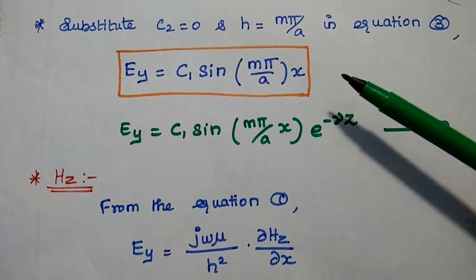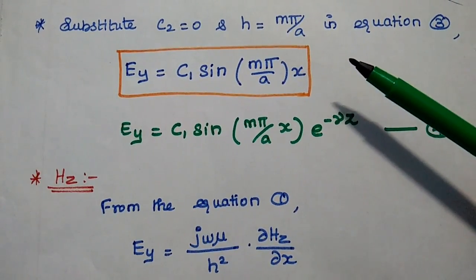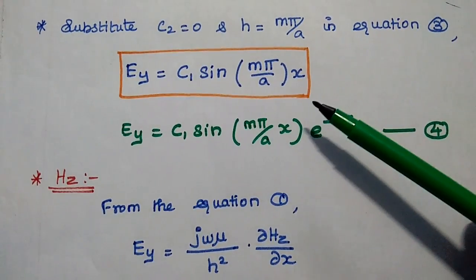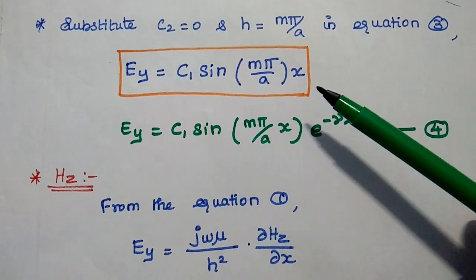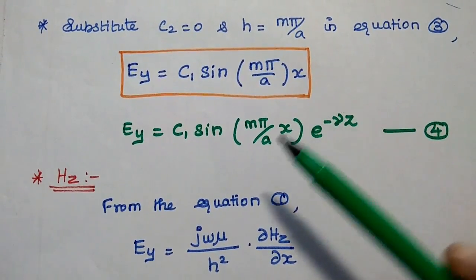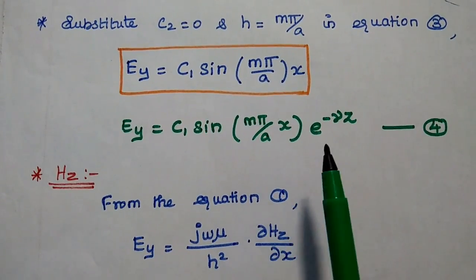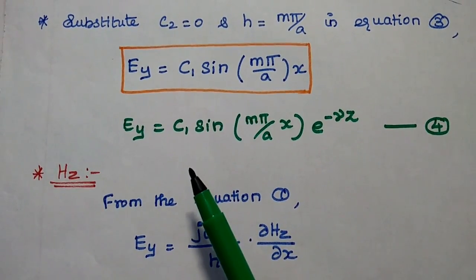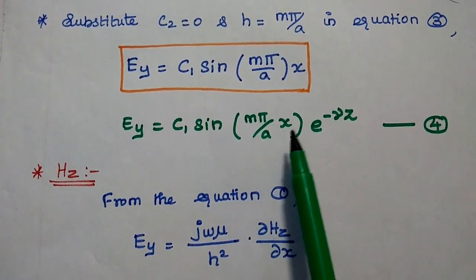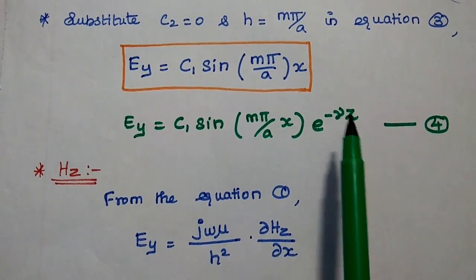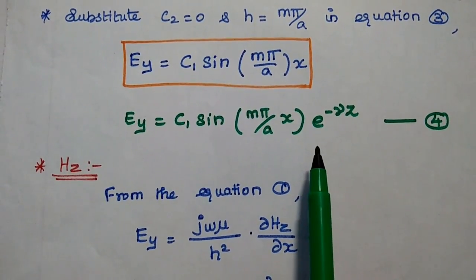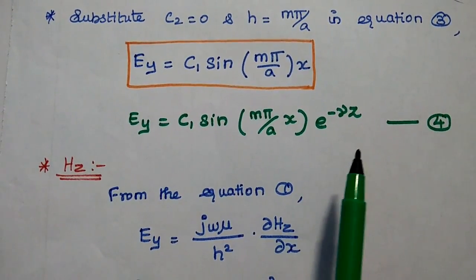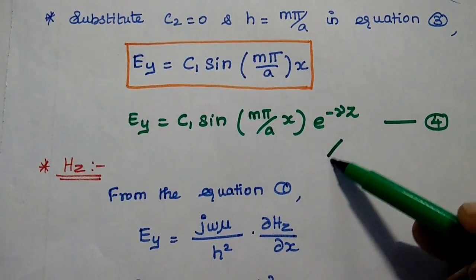Substituting C2 = 0 and H = Mπ/A in equation 3, we get EY = C1·sin(Mπ/A · X). This is the magnitude value; we must include the propagation phase. So the EY field component for the TE wave is: EY = C1·sin(Mπ/A · X) · e^(−γZ). This represents propagation in the Z direction — magnitude along with phase. Consider this the fourth equation, which is the first field component of the TE wave.